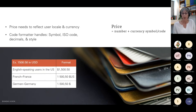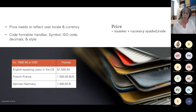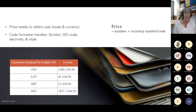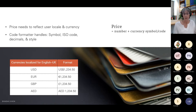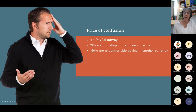Price needs to reflect the user locale and currency, and a code formatter will handle where the symbols are placed. An English speaker in the US will see the dollar sign to the left. A French speaker in France will see that same amount with the dollar sign to the right, and a German will also see it on the right — with number formatting in their locale. A 2018 PayPal survey showed that 76% of shoppers want to shop in their own currency, and 50% feel uncomfortable paying in another currency. For example, if you spent $950 online and then your credit card bill showed $1,300 Australian dollars, it's questionable whether you would return to that store.